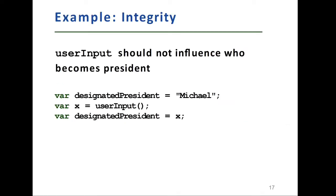Here you can see one example of integrity in a simple piece of code. Our policy is user input should not influence who becomes president. In the first line, we have a variable which is called designated president and that holds the name of president. And then the second line, we get some information from user or from source or external environment. We don't have control on this data.